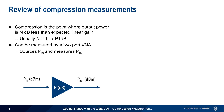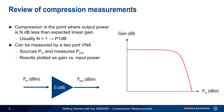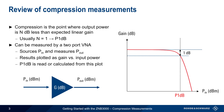One port of the VNA sources the device input power, PIN, and another port measures the output power, Pout. The results are plotted as gain versus input power, which produces a graph such as the one shown here. The 1 dB compression point, P1dB, can then be read or calculated from this plot.